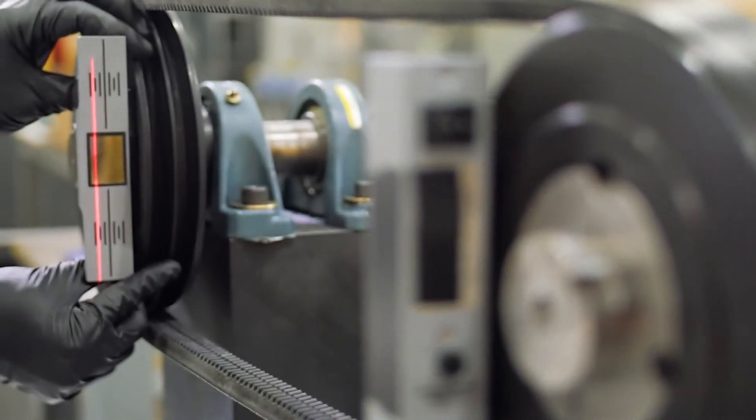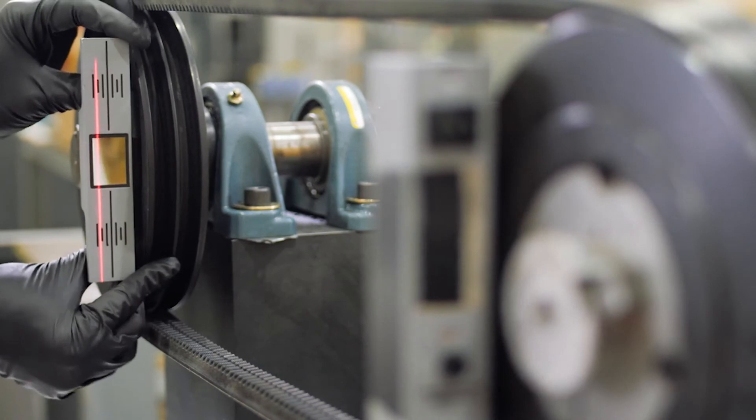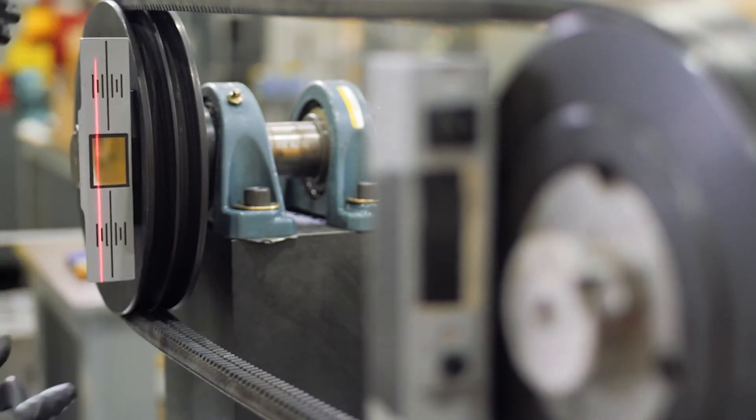The laser alignment tool consists of two components, one that emits a laser beam and one which reflects the laser towards its origin.